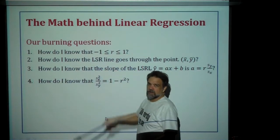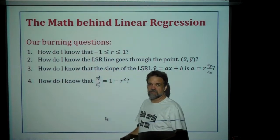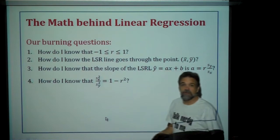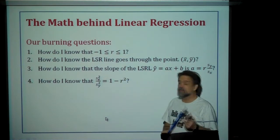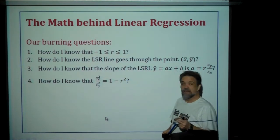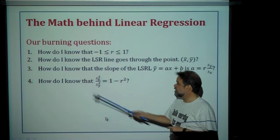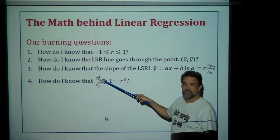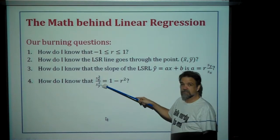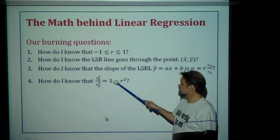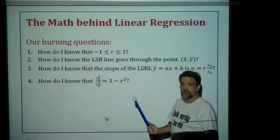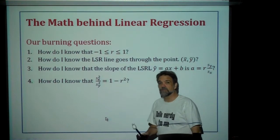Basically, questions two and three are kind of the same question — how can I find the formula for the least squared regression line? And then finally, question number four: how do I know that the ratio of the variance of the residuals to the variance of my y-data is one minus r squared? I just stated it in the last video, but I didn't prove it. Today we prove it.